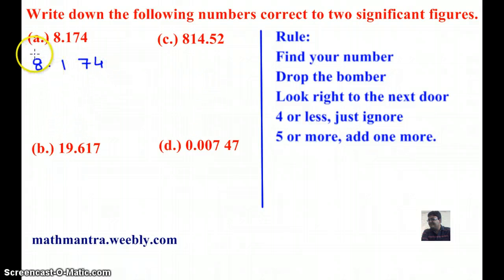Now here, 8 is the first significant figure and 1 is the second significant figure. I am going to circle 1 because we are rounding off numbers correct to two significant figures. Now the next number is 7, which is of course more than 5, and therefore I must add 1 to the circled number. So my answer is 8.2.